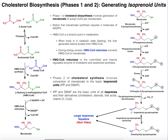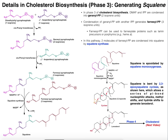In the previous video, we started the basics of cholesterol synthesis, and we saw how we generate isoprenoid units, or isoprenes, which were isopentanyl pyrophosphate (IPP) and dimethyl allyl pyrophosphate (DMAP). Ultimately, we're going to take these isoprene units and condense them into larger isoprenes. This is going to be the topic of phase three in cholesterol biosynthesis, which is going to give us squalene.